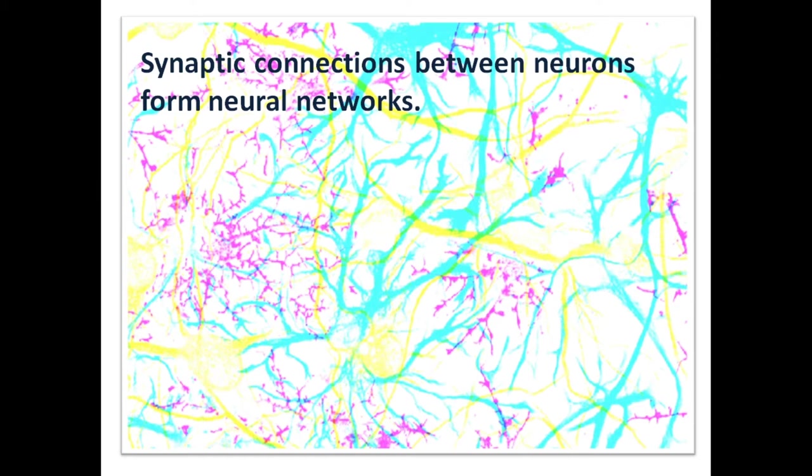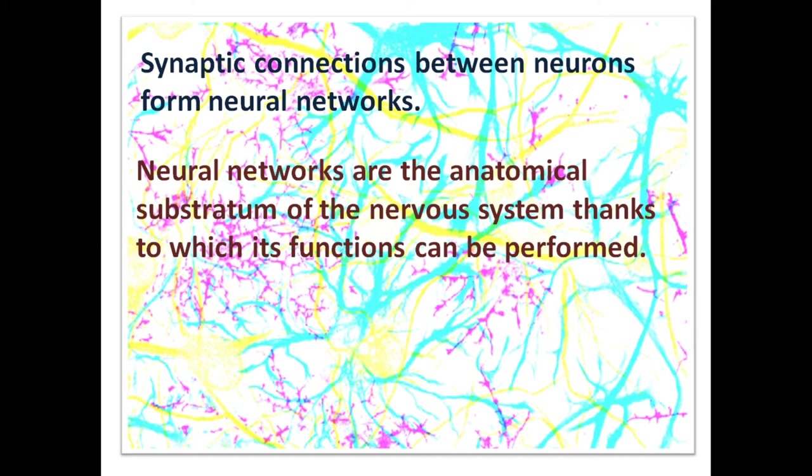Synaptic connections between neurons form neural networks. Neural networks are the anatomical substratum of the nervous system thanks to which its functions can be performed.